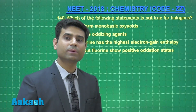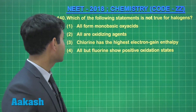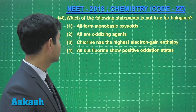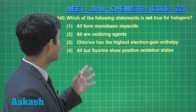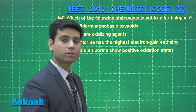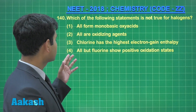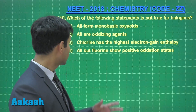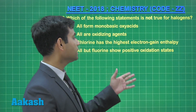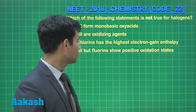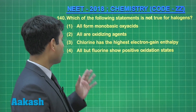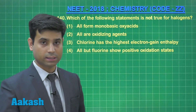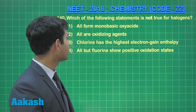The next question is question number 140, which says: which of the following statements is not true for halogens? Option 1: all form monobasic oxy acids. Option 2: all are oxidizing agents. Option 3: chlorine has the highest electron gain enthalpy. Option 4: all but fluorine show positive oxidation states.